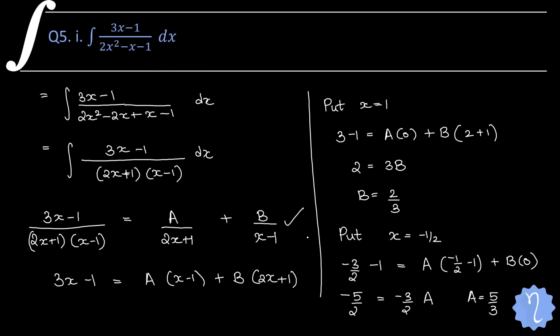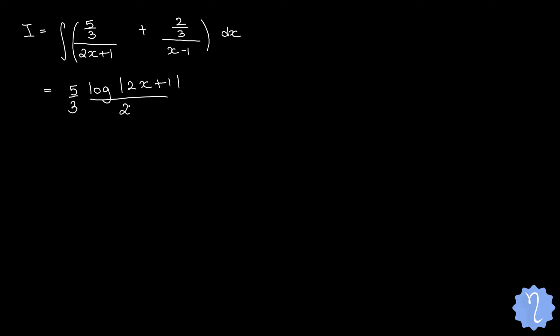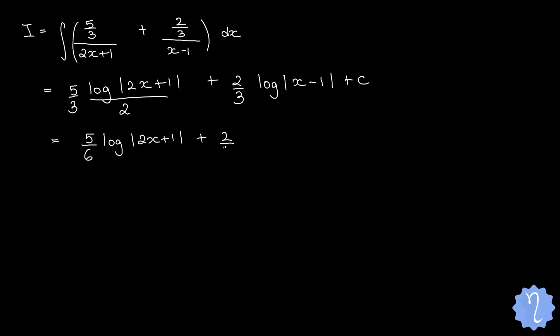Substituting back: ∫[(5/3)/(2x+1) + (2/3)/(x−1)] dx = 5/3 · log|2x+1|/2 + 2/3 · log|x−1| + c = 5/6 · log|2x+1| + 2/3 · log|x−1| + c. That is the final answer.